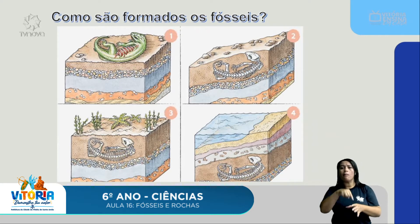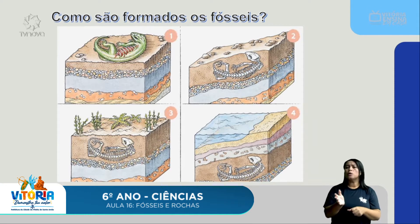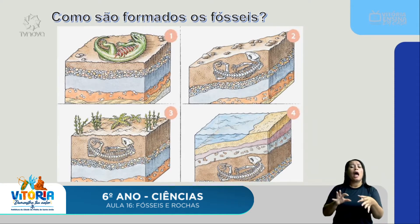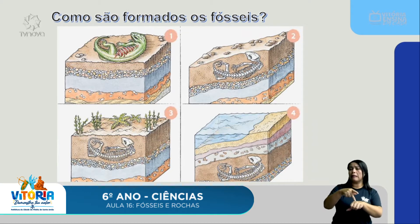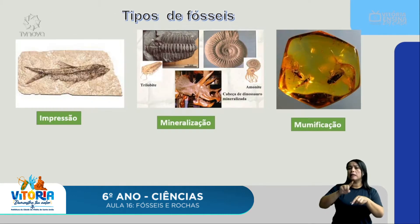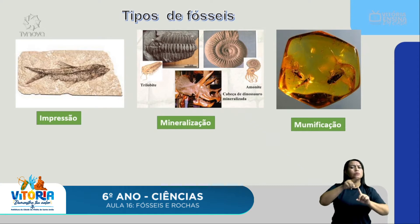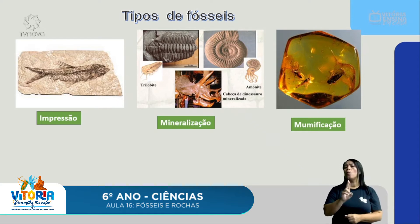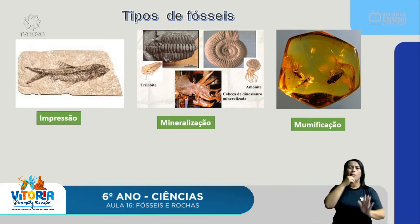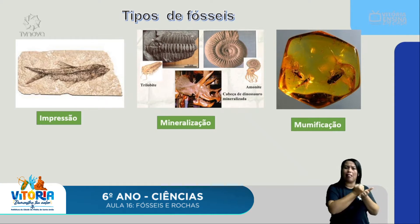A formação de um fóssil dura milhões de anos e esse fóssil é agregado, unido à terra. Essa terra vai virar um solo, uma pedra, uma rocha ao longo de milhões de anos. Existem diversos tipos de fósseis. Entre eles, existe um chamado de impressão, em que parece que o animal foi carimbado na rocha, impresso como uma folha.